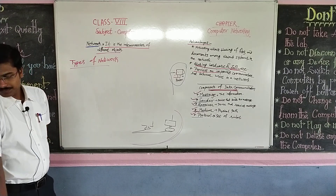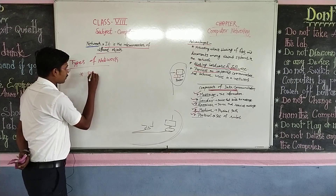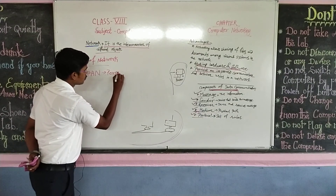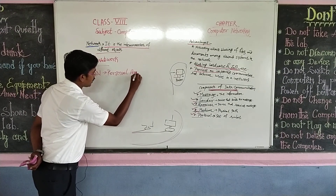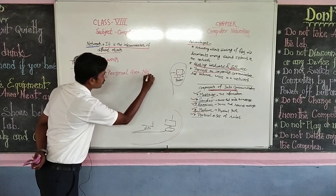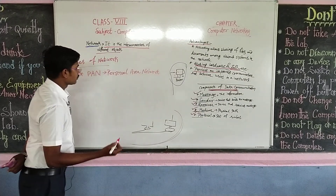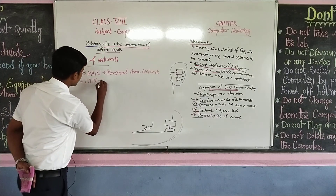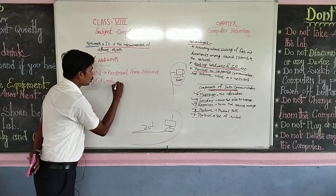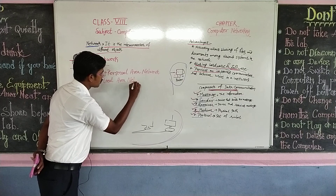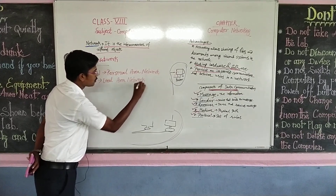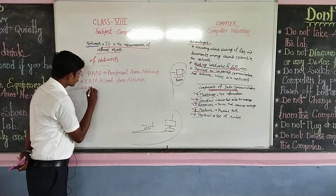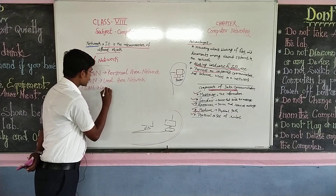The first type is called PAN — the full form of PAN is Personal Area Network. The next one is called LAN — the full form of LAN is Local Area Network. The next one is called CAN — that is Campus Area Network.